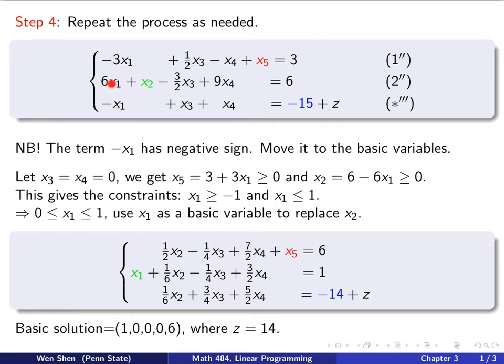So make it coefficient 1 divided by 6. That's the second equation. And then you can divide this by 2, add on top of the first one to get rid of that x1, and that will give you the first equation.